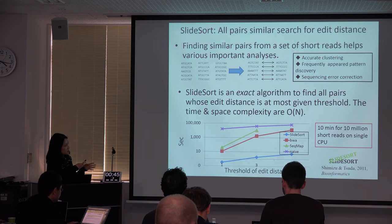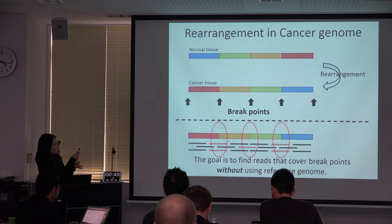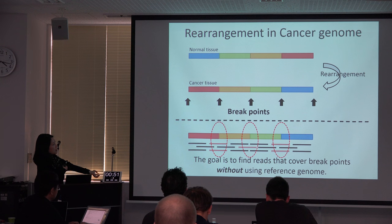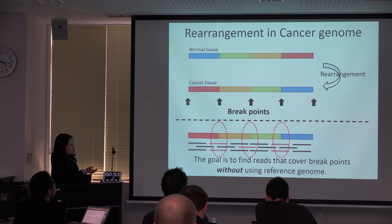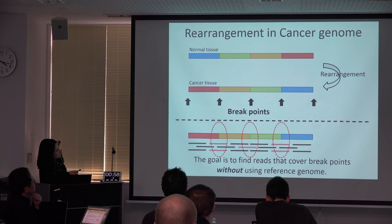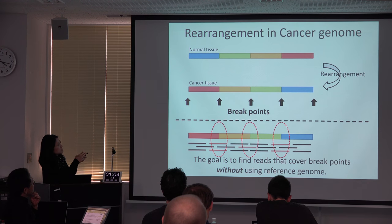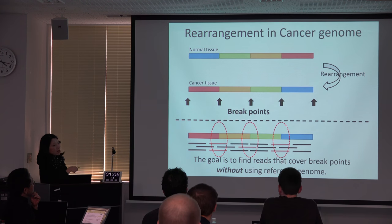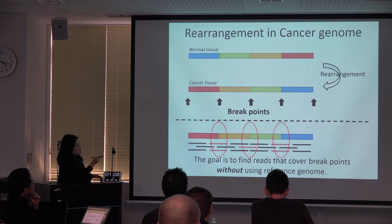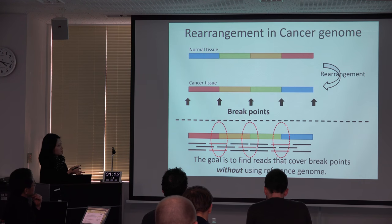I'll skip the details about the algorithm, but by using these all-similar-pair sets, we developed another application to find the breakpoint reads without using a reference genome. This is the schematic view of rearrangement of cancer genomes, and our goal is to find the reads that overlap the breakpoints. This is a very simple goal.